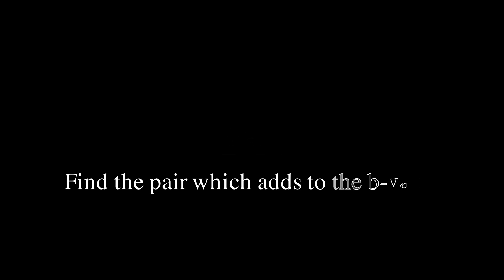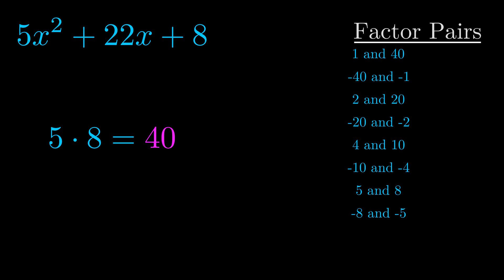The b value is the coefficient on the x term. That's the middle term, the one that we haven't done anything with yet. And really this is the only factor pair that we need.